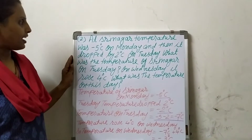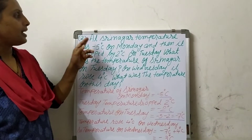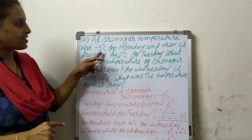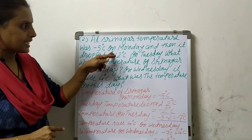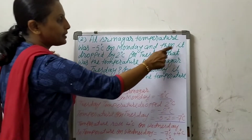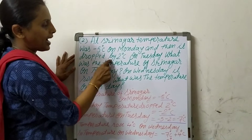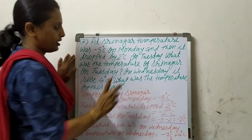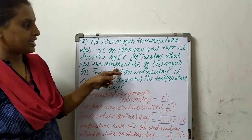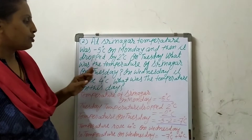My second word problem is like this. At Srinagar, temperature was minus 5 degree centigrade on Monday, and then it dropped by 2 degree centigrade on Tuesday. What was the temperature of Srinagar on Tuesday?